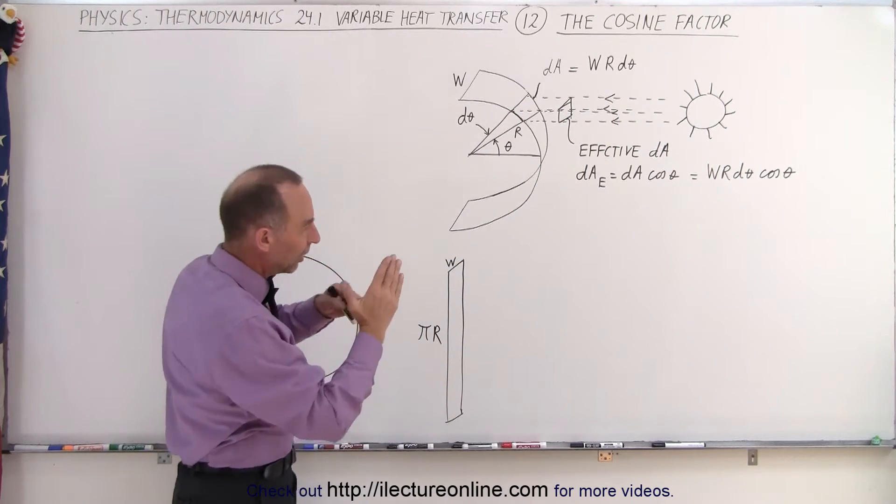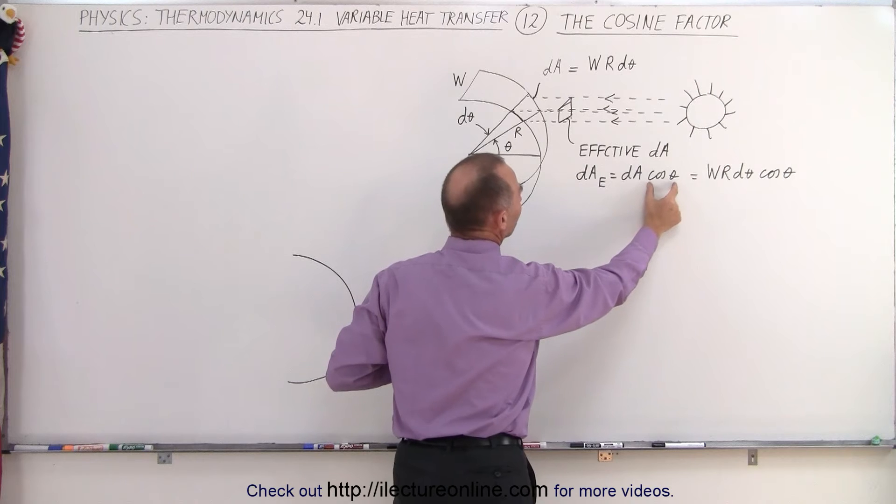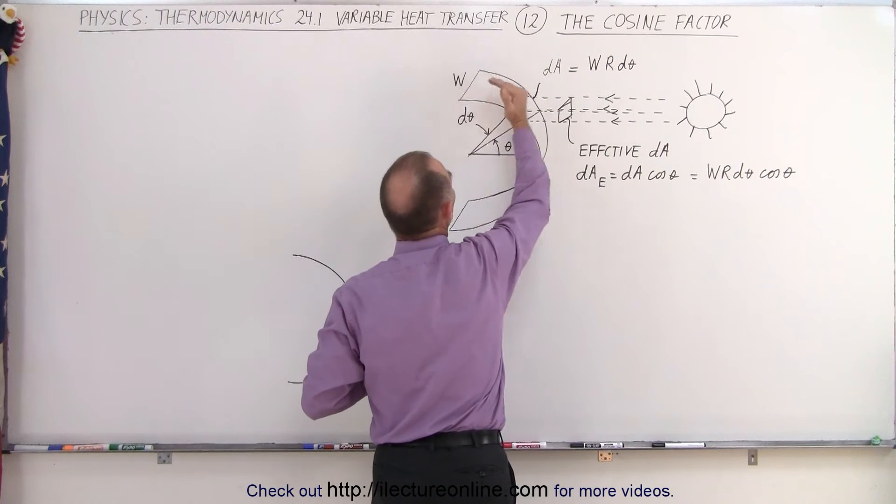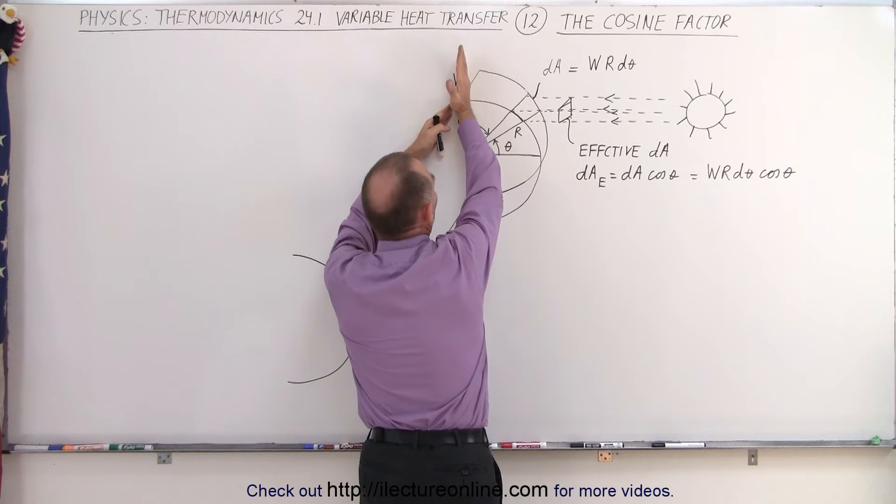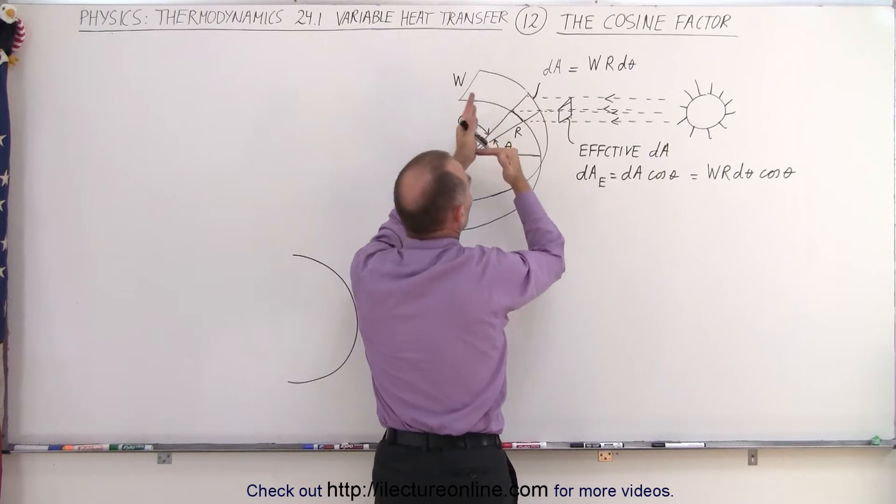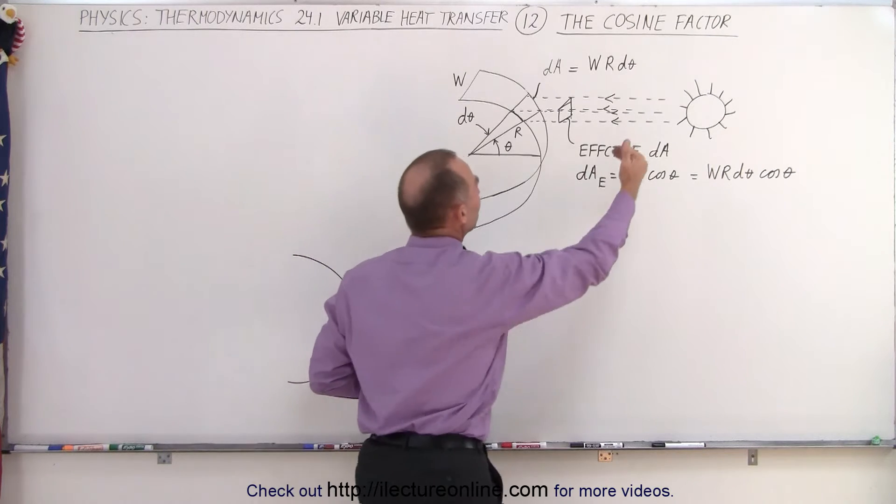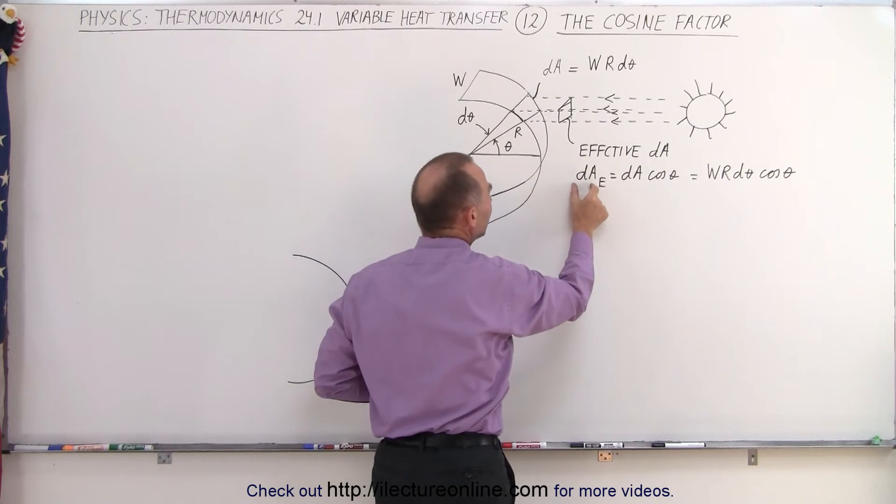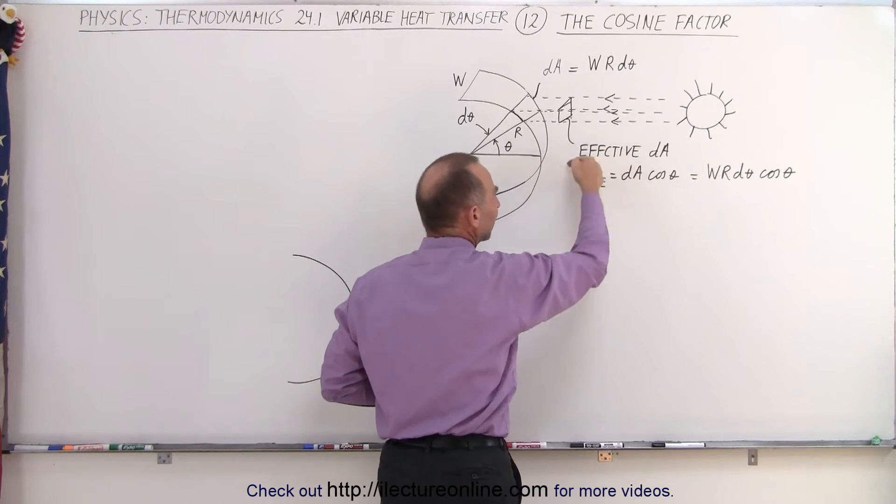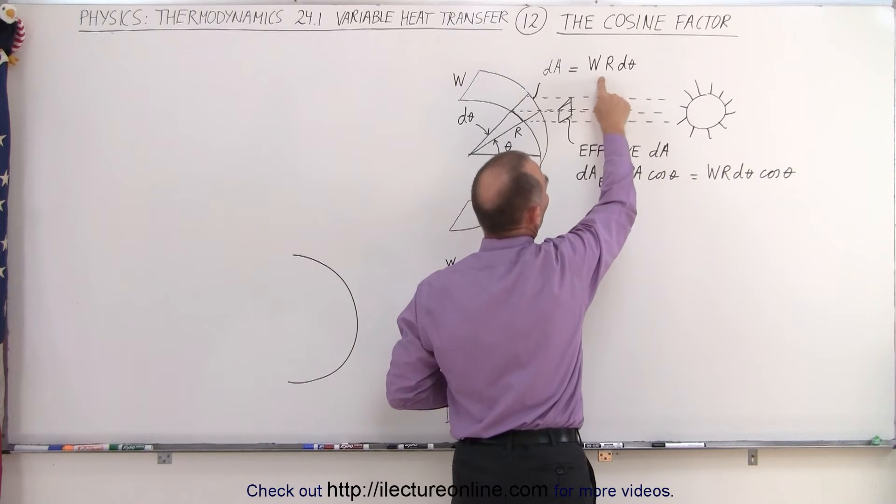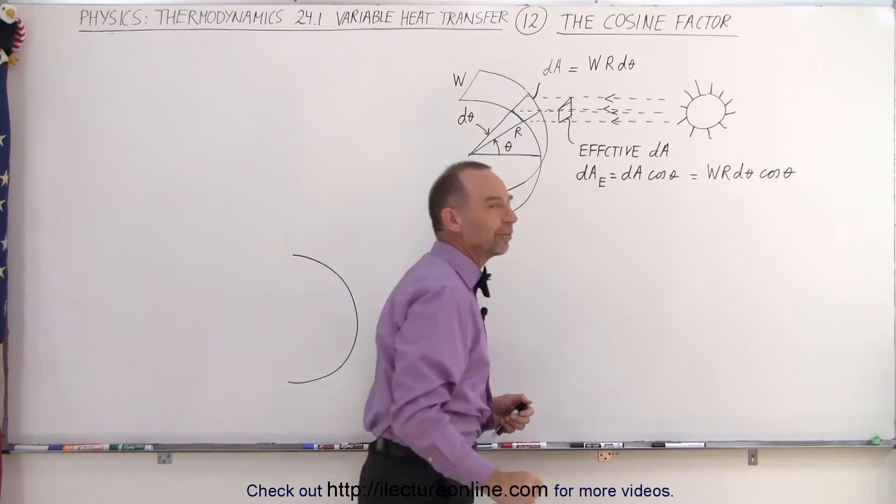The effective area, then, the amount of area that sees the radiation, so to speak, then must be multiplied times the cosine of theta. Notice when theta is 90 degrees, there is no radiation hitting the surface because the perpendicular to the surface is perpendicular straight up, and the radiation is horizontal, so the angle is 90 degrees. Cosine of 90 is equal to 0. But the effective amount of radiation hitting any portion of that strip is going to be equal to the dA multiplied times the cosine of theta. So dA times the cosine of theta gives us the effective dA, which is therefore equal to w r d theta, which is the area on the strip, the small little area segment, times the cosine of the angle.